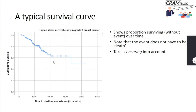Another example of censoring: a patient enrolled in a breast cancer study dies in a road traffic accident. If you're only interested in deaths directly related to breast cancer, that patient is censored at the point of their accident death. A third example: in a 10-year study, a patient recruited in year nine has only one year of follow-up. At study completion, if the patient is still alive, they are censored at one year because you have no data beyond that point.